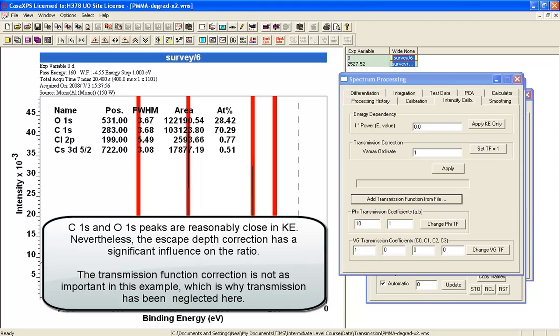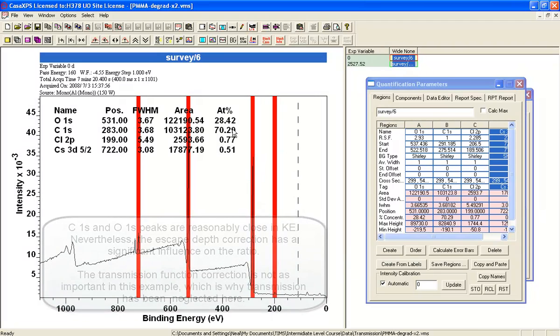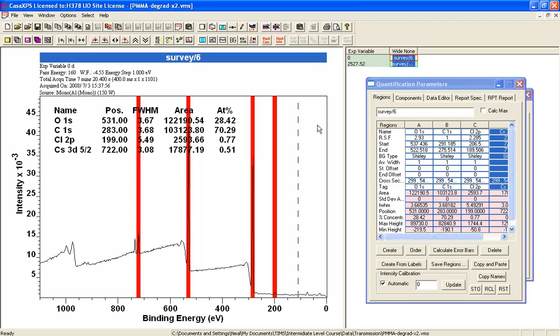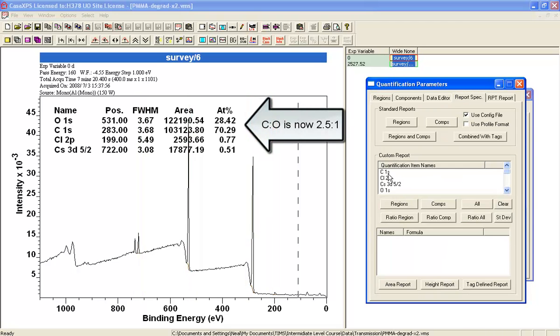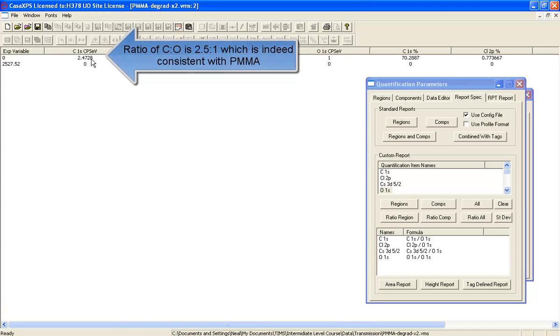You can see the transmission function was updated. Now the ratio you see here, simply by correcting these Schofield cross-sections by an escape depth correction, I've improved the quality compared to what we expect for PMMA. Looking at the ratio of carbon relative to oxygen, with oxygen as unity, that's what we expect for the ratio.